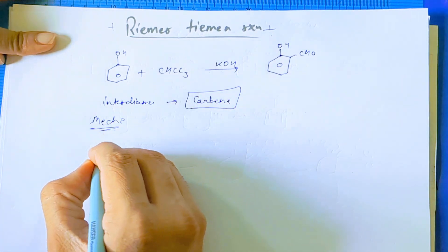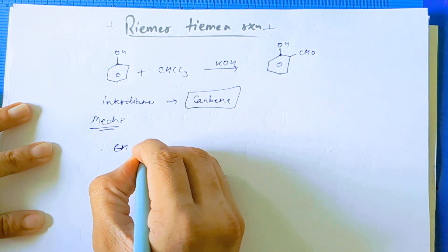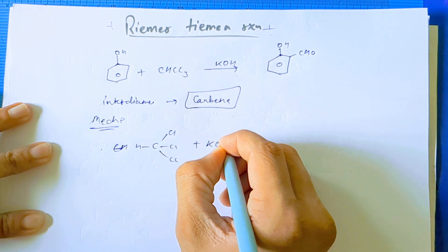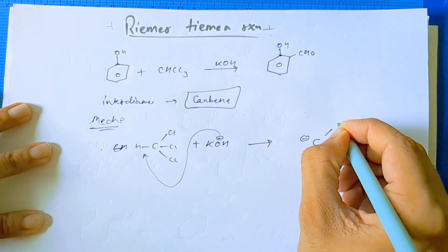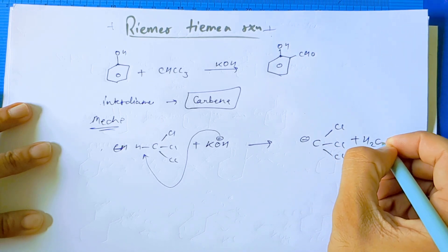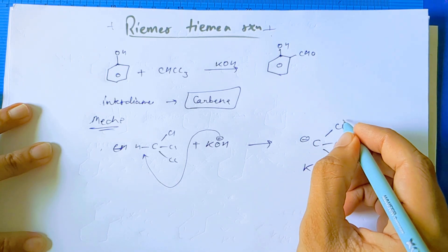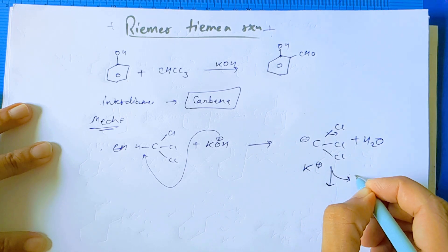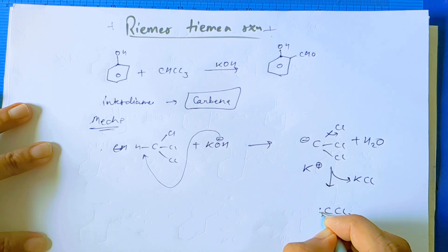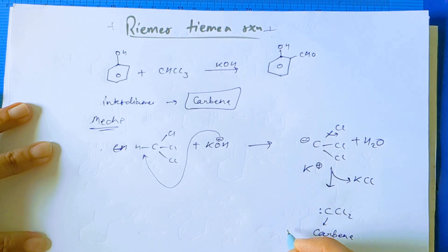Here, first a carbene generation will occur. Let's write the reaction: CHCl3 plus KOH. The hydroxide anion will take this hydrogen and gives us an anionic species, and here is water. The K+ cation present in solution will take the chloride anion after breaking this bond. So KCl will be released and CCl2, a 6-electron carbon, that is carbene — it is an electron deficient species.